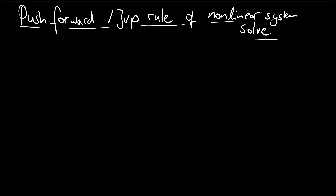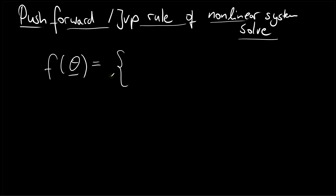In this video we're going to derive the push forward or Jacobian vector product rule for nonlinear system solving. Nonlinear system solving is the generalization of root finding to systems of nonlinear equations. We have a function which takes a parameter vector theta as input, and the output of that function is implicitly prescribed by the solution to a nonlinear system of equations.